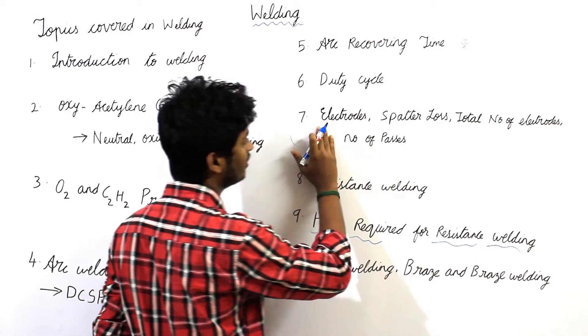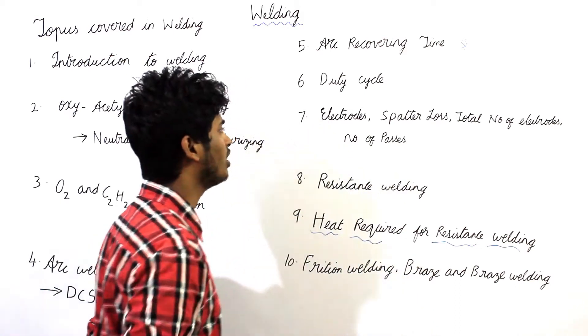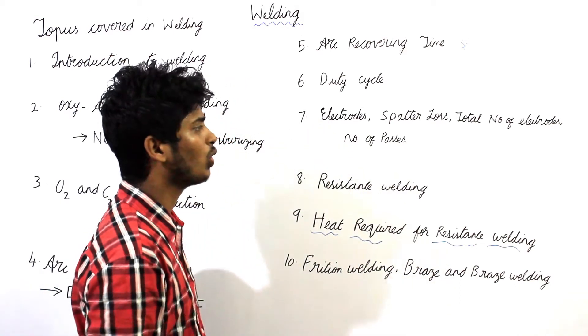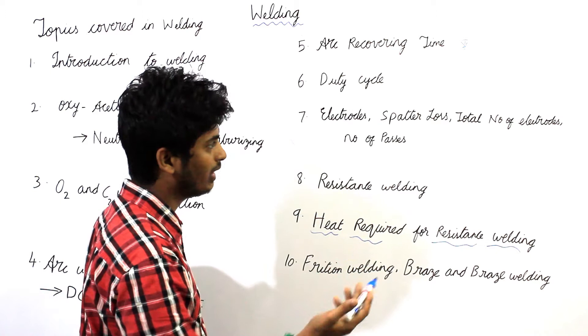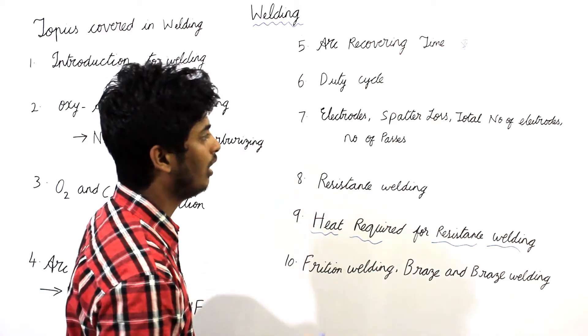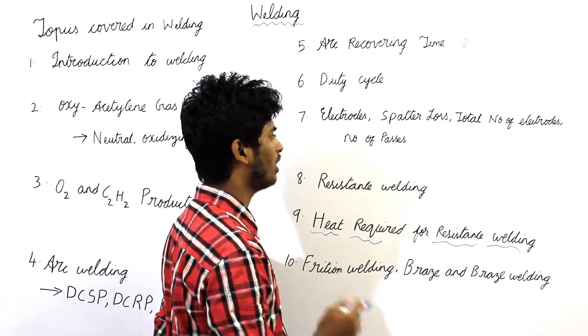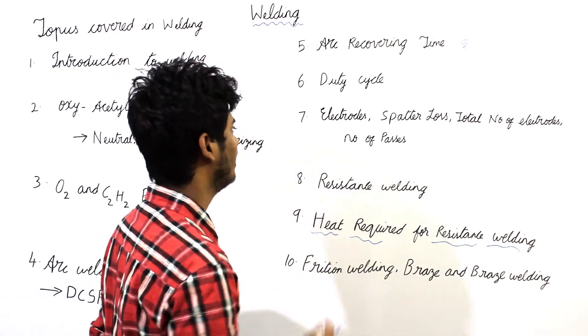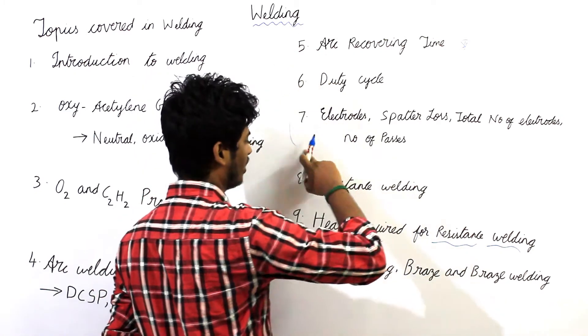The seventh topic is where we will study about electrodes, what is metal loss, types of electrodes, total number of electrodes, and number of passes. These three topics are problem-based.